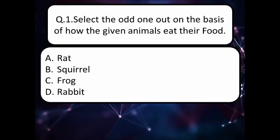Let's start with the first question: select the odd one out on the basis of how the given animals eat their food. Read the options carefully and think about the answer. Option A rat, option B squirrel, option C frog, and option D rabbit.